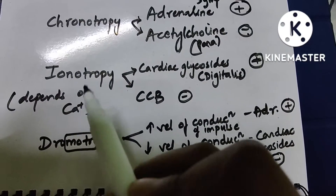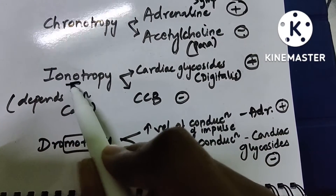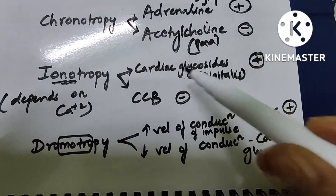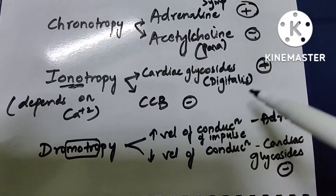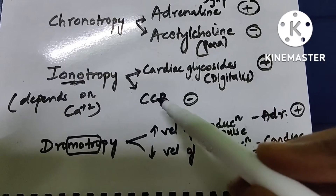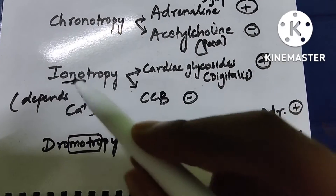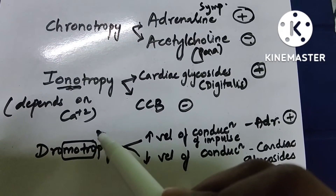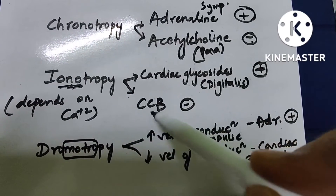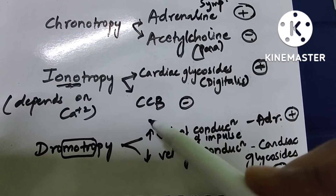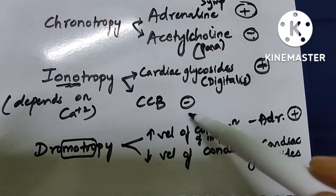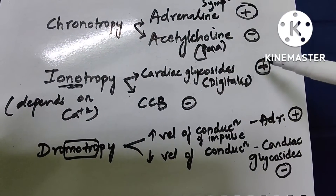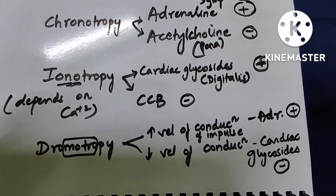Coming to inotropy — inotropy is related to 'ON,' meaning contractility. Positive contraction is by cardiac glycosides, for example digitalis, and the negative is by calcium channel blockers. Contraction is related to the amount of calcium ions in the heart muscle. Calcium channel blockers decrease calcium, giving negative inotropy. Digitalis/digoxin increases calcium, giving a positive inotropic effect.